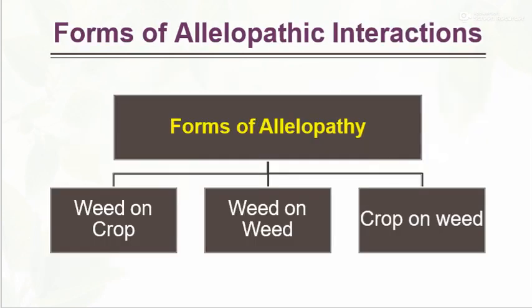Forms of Allelopathic interaction. The forms include: weeds on a crop, weed on weed, and crop on weed. The allelopathic effect may be crop on weed, weed on crop, and weed on weed.